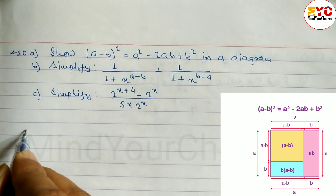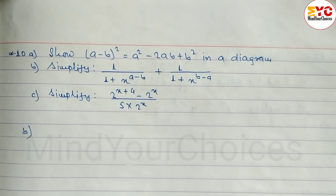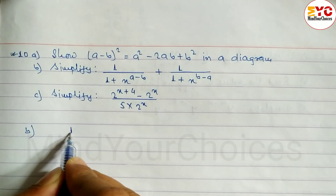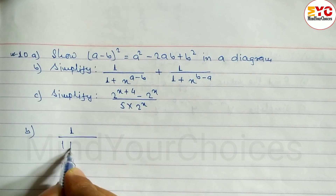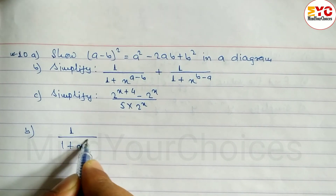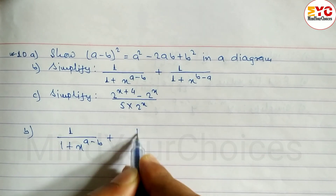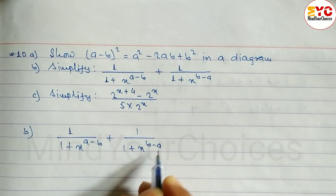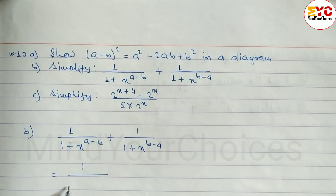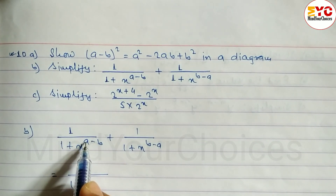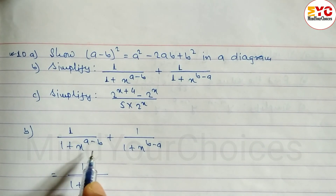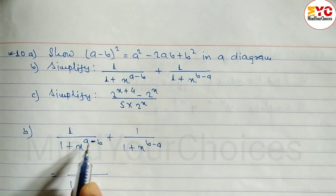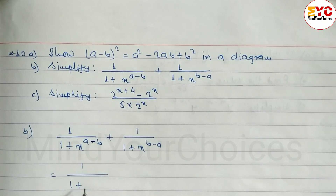After that, question part B: Simplify. First of all, copy the question: 1 divided by (1 plus x to the power A minus B) plus 1 divided by (1 plus x to the power B minus A). Now the minus in the exponent means divide.